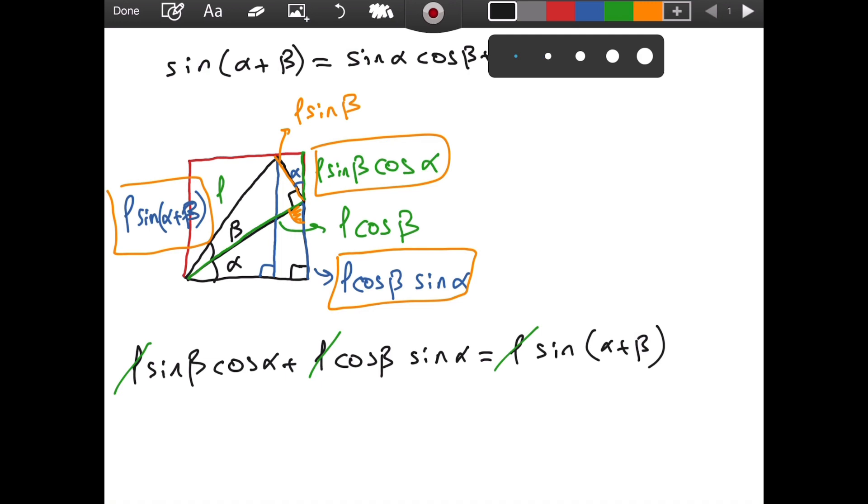And actually, we are done. Because look at this, it is reversed in the order, but we have sine of alpha plus beta being equal to cosine of beta times sine of alpha. It is the first term here. And then we have sine of beta cosine of alpha, which is the second term here. So we in fact derive the formula for sine of alpha plus beta.